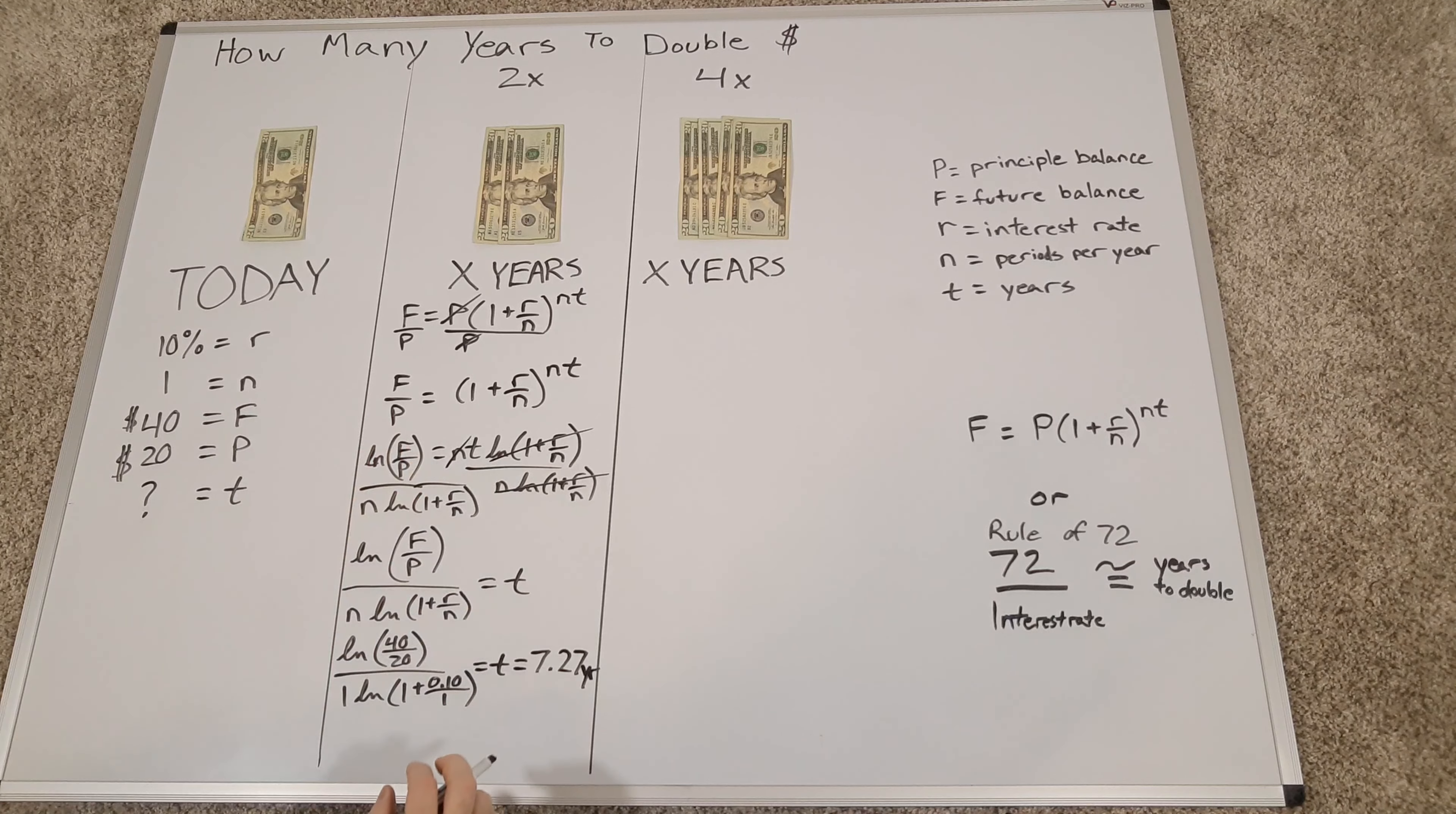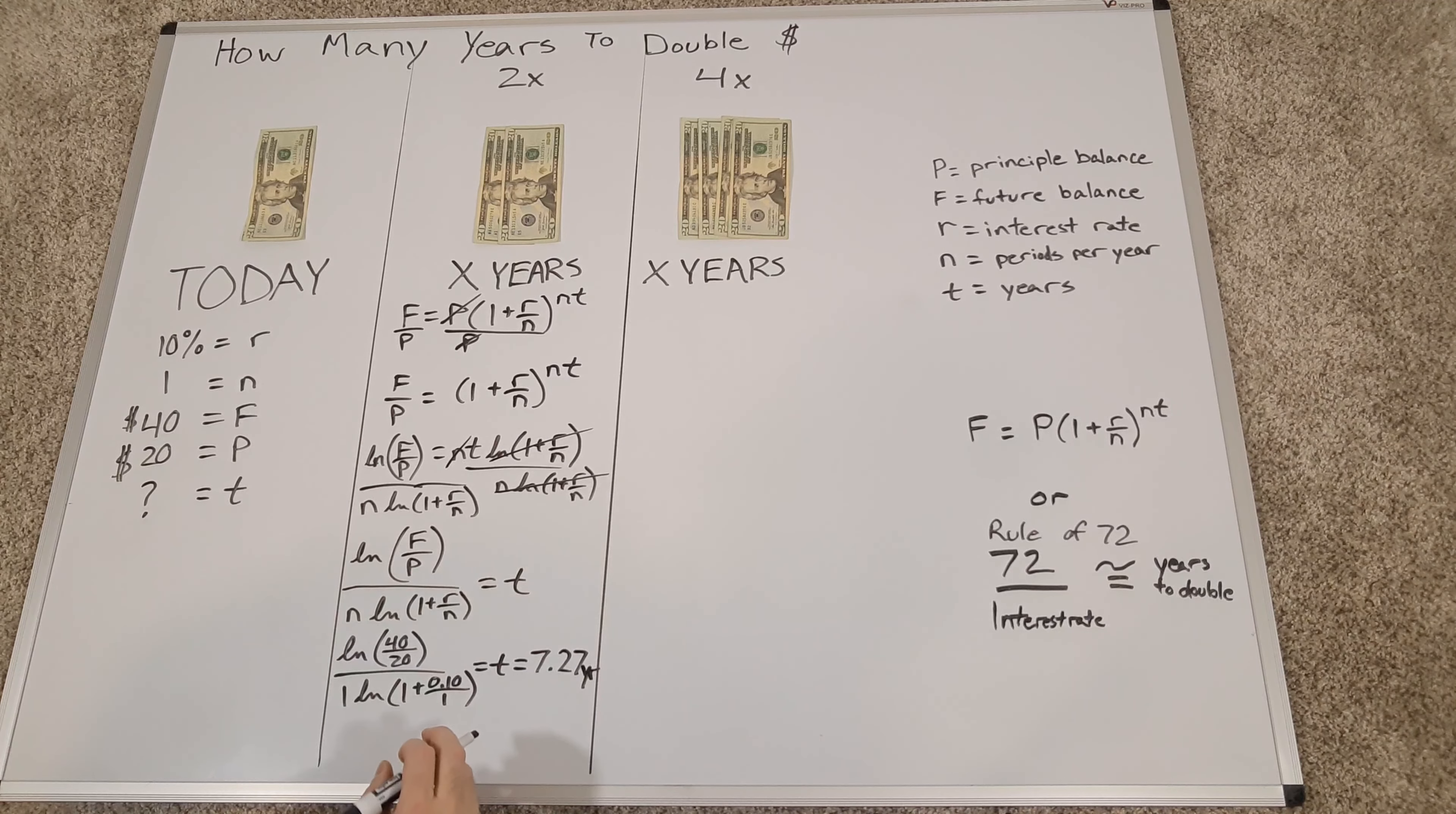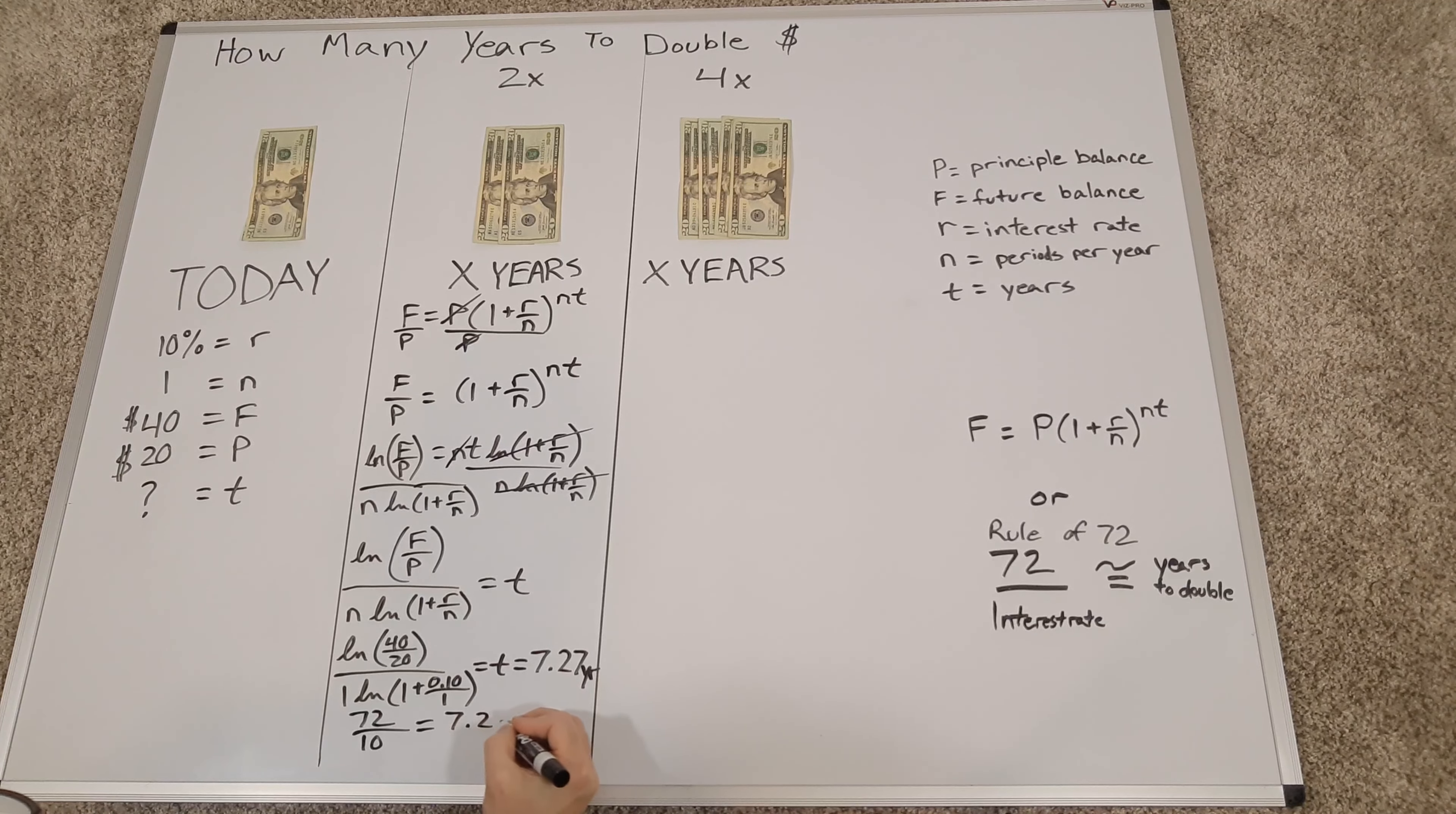Now, that's a lot of math, and a lot of people don't want to do that. So they have something else that they call the rule of 72. The rule of 72 is that you take 72 divided by the interest rate, and it will give you approximately how many years it takes to double. So let's just say we have 72 divided by 10. What's that equal to? 7.2 years.